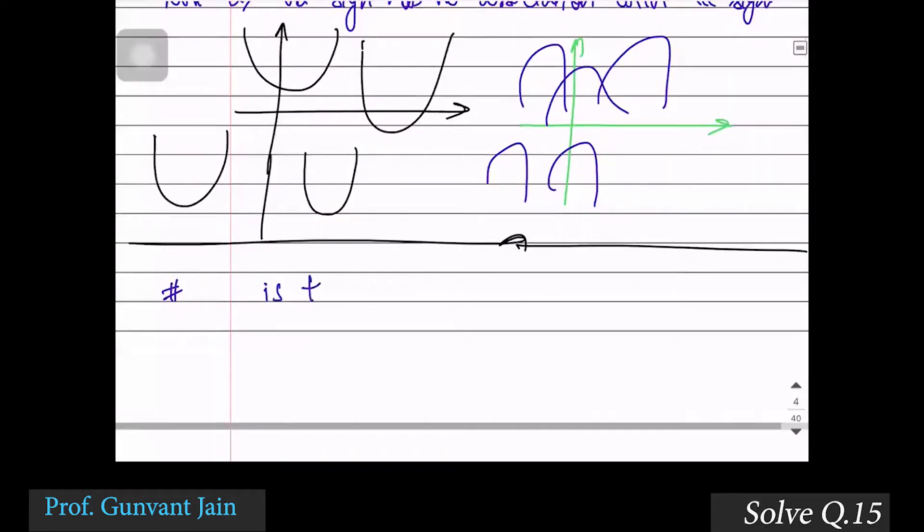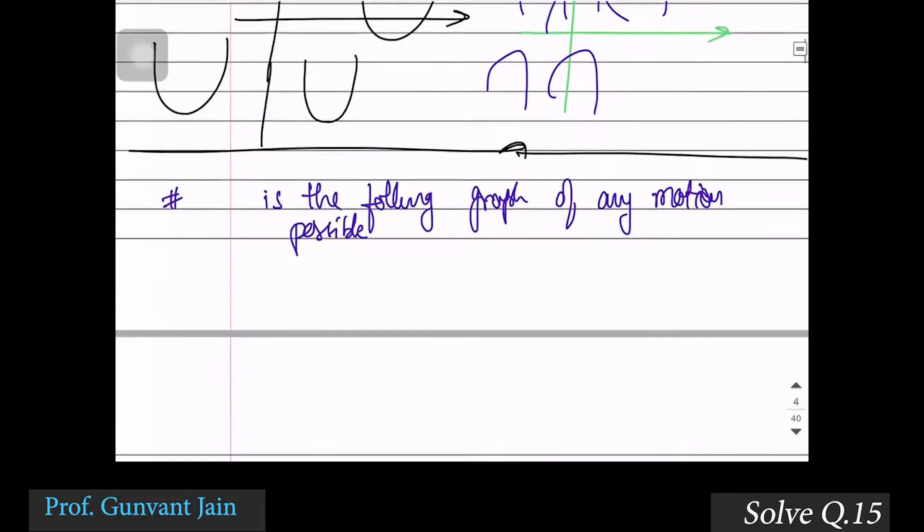Is the following graph of any motion possible? Let us know if this graph is possible.